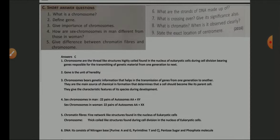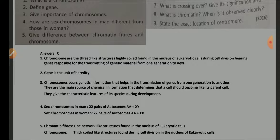Part C — short answer questions. What is a chromosome? Chromosomes are thread-like, highly coiled structures found in the nucleus of eukaryotic cells during cell division, bearing genes responsible for transmission of genetic material from one generation to the next. Define gene: a gene is a unit of heredity.